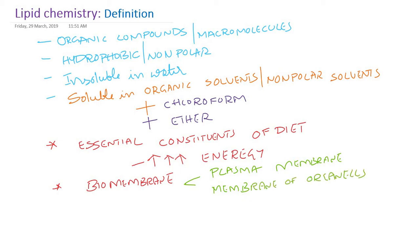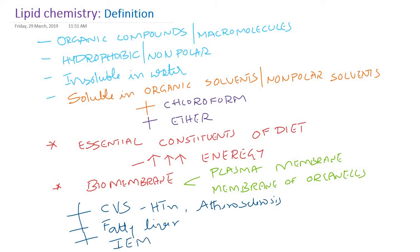If there is any defect in their metabolism, it will lead to different diseases. Many diseases are related to lipids, like cardiovascular disease, hypertension, atherosclerosis, and even fatty liver. There are various inborn errors of metabolism or lipid storage diseases. We need to learn the structure, chemistry and different classes of lipids because they are essential — without lipids our cells cannot survive, as the structural integrity of the cell membrane depends on lipids.